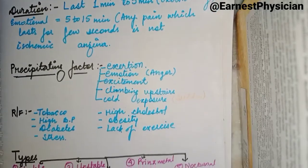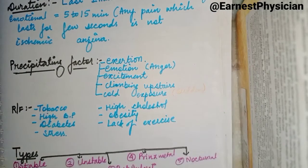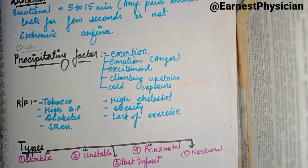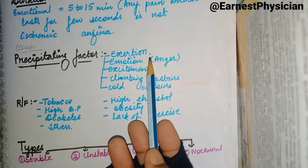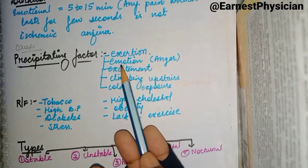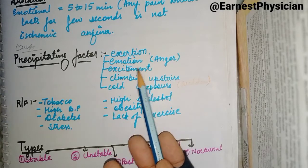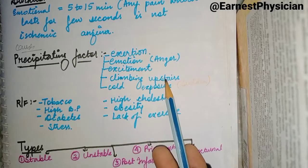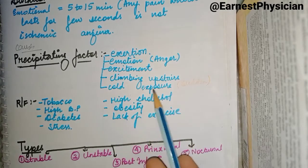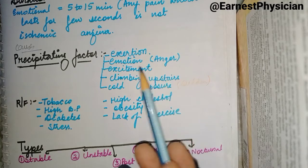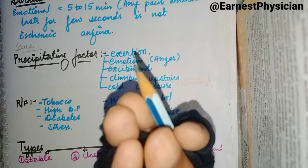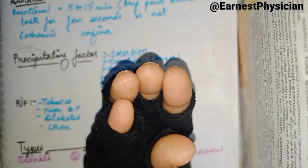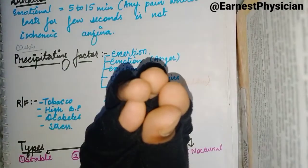Now let's talk about precipitating factors. The pain can be triggered by exertion — physical activity on the body — or by emotional disturbance, or excitement. Cold exposure is also a precipitating factor: when there is cold exposure, blood vessels constrict and blood supply is reduced, triggering the pain.